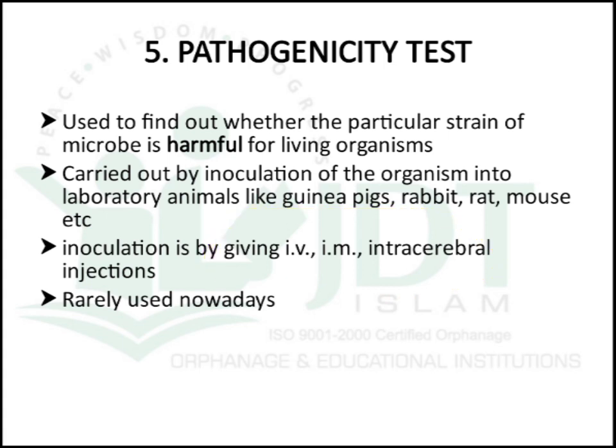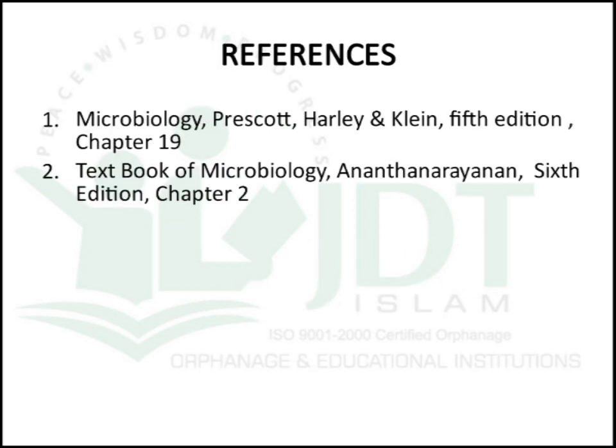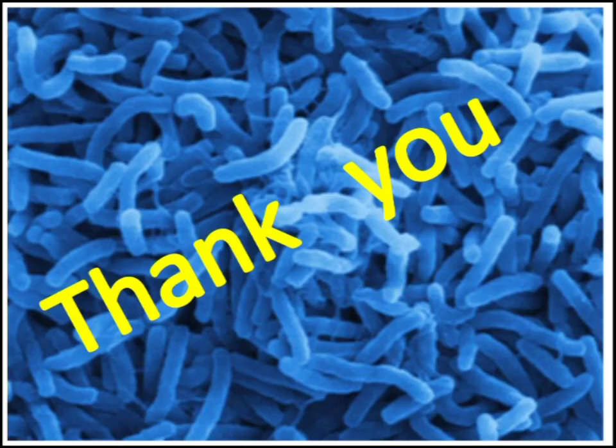Finally, genetic and molecular analysis involves studying the adenine, thymine, and guanine-cytosine proportion, which differs for each species. Genetic analysis is used to detect different enzymes, toxins, antigens, metabolic end products, and polymerase chain reaction. That concludes the genetic and molecular analysis and the reference methods for identification of microorganisms.